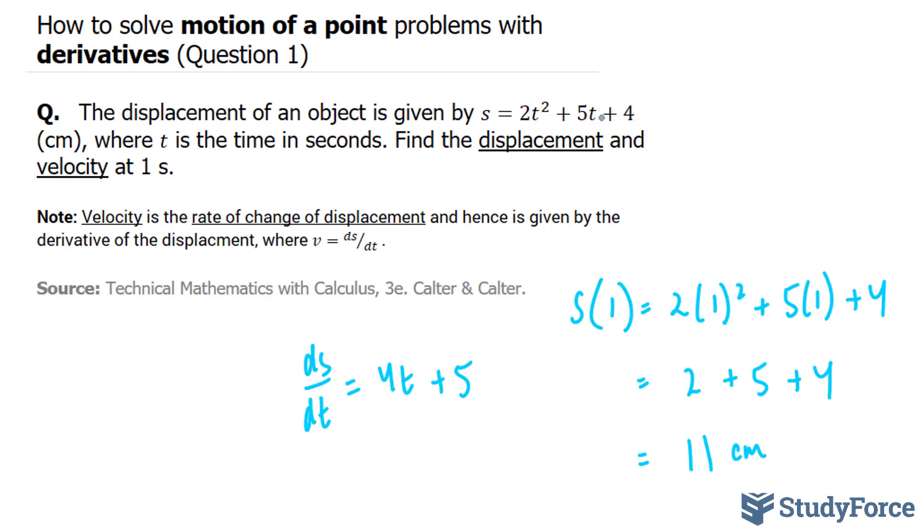Now we need to find out what this is when t = 1. So we set t = 1. 4(1) = 4, plus 5 is 9. 9 centimeters per second.